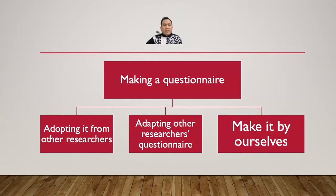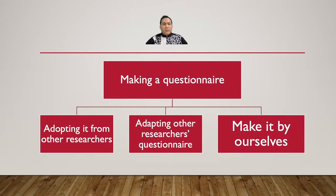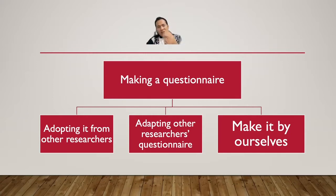A questionnaire can be obtained by three different ways: adopting it from other researchers, adapting other researchers' questionnaires, or making it by ourselves. This is a repetition of the first material. Adopting means you clearly take all parts of the questionnaire from other researchers.